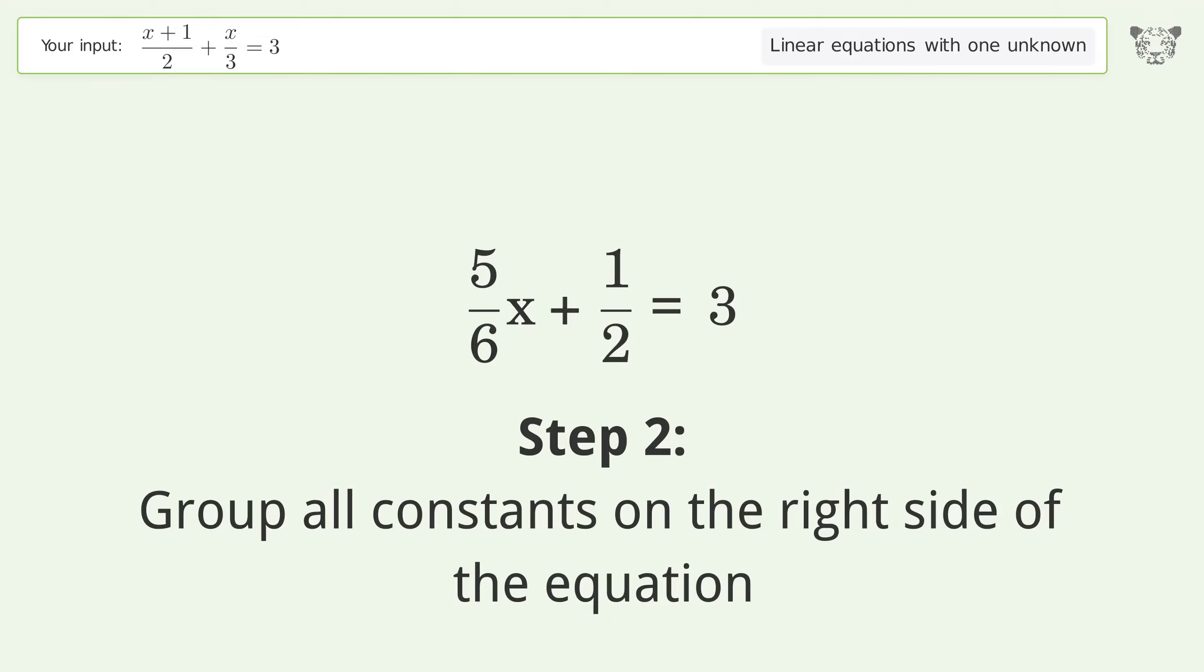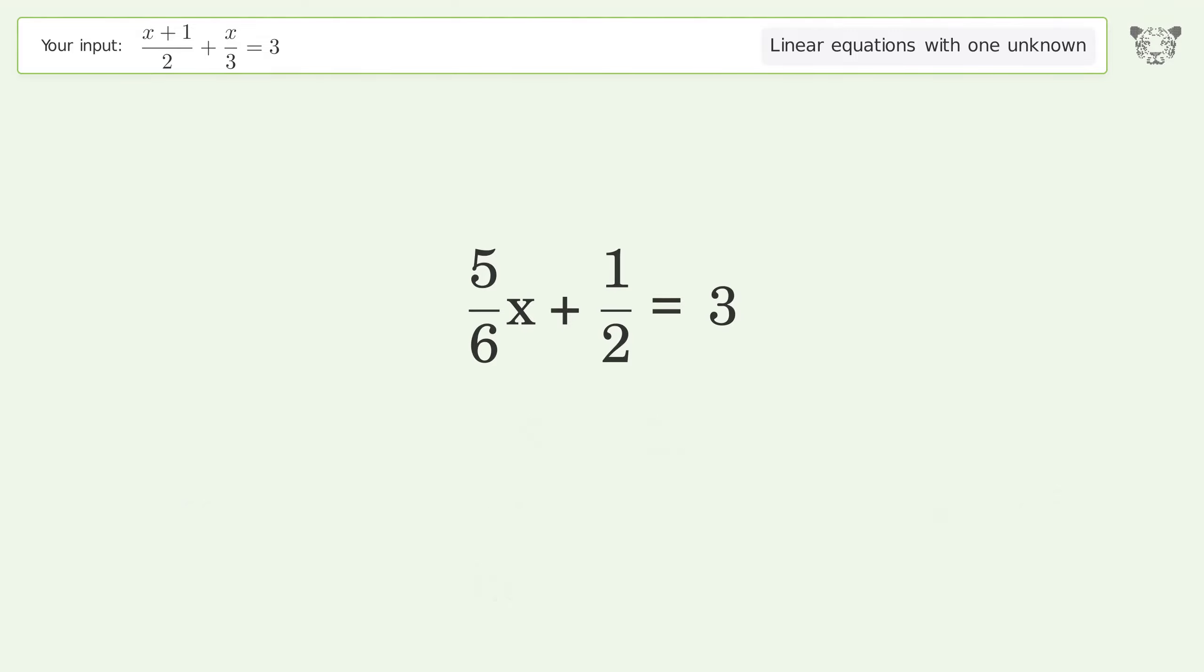Group all constants on the right side of the equation. Subtract 1 over 2 from both sides. Combine the fractions, then combine the numerators. Reduce the zero numerator and simplify the arithmetic.